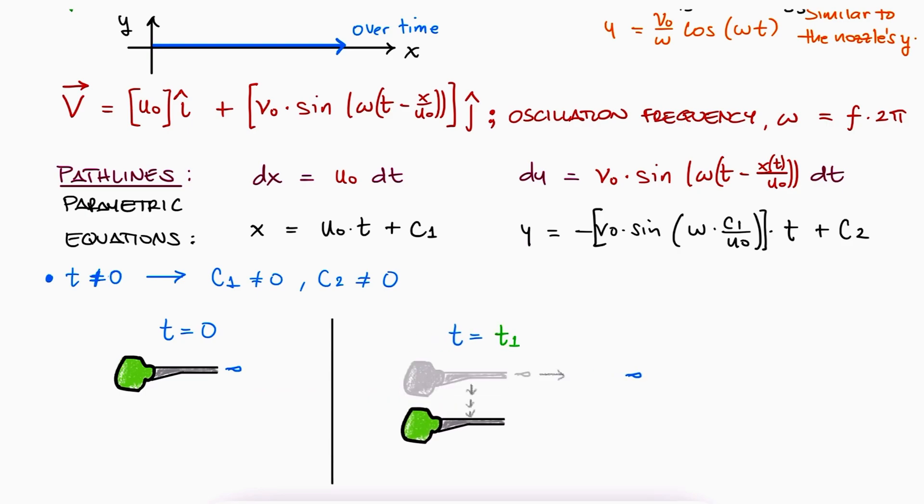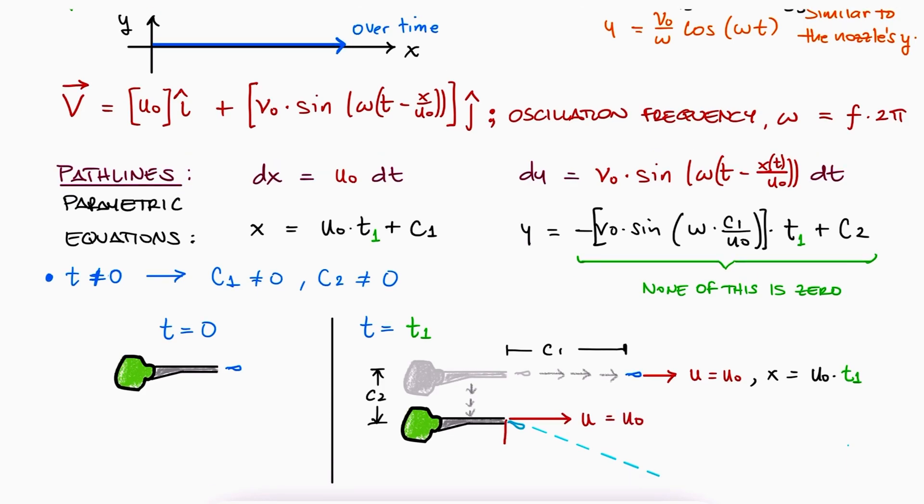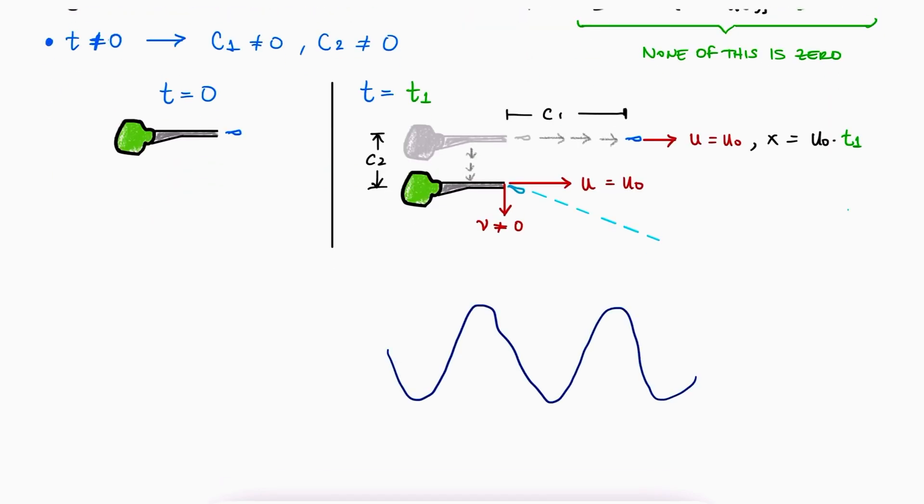Because the nozzle moved, c1 and c2 shift the position of that drop that is being dispensed with respect to the drop that had already been dispensed at t equal to zero. And now we have a function of t for y as well, meaning that these two parametric equations describe a straight line with a slope. And this, once again, makes sense, because when the nozzle is dispensing the drop towards the right with a speed of u-naught, while the nozzle is moving down, the drop will leave the nozzle moving towards the bottom right and maintain that direction. Nothing is accelerating that particle for it to change its trajectory. This example shows you how streamlines and pathlines are definitely describing two very distinct information.